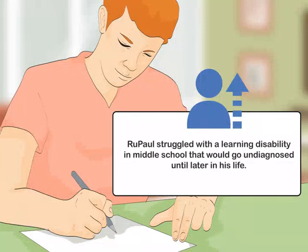Mention details about the person's upbringing. Discuss any details from their upbringing that reflect on their later life. Make sure you mention key moments in their family or social circle that seem to impact their childhood and how they developed as a young person. For example, you may write about the person's experience with abuse at the hands of a parent, or mention that the person struggled with a learning disability in middle school that would go undiagnosed until later in their life.